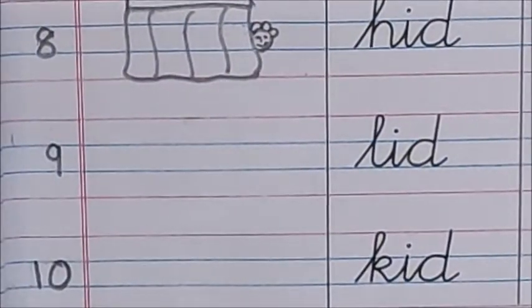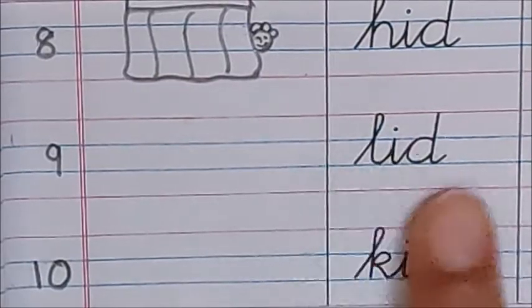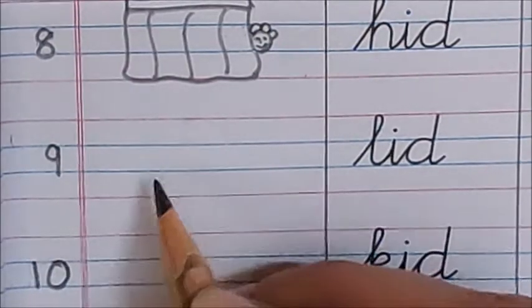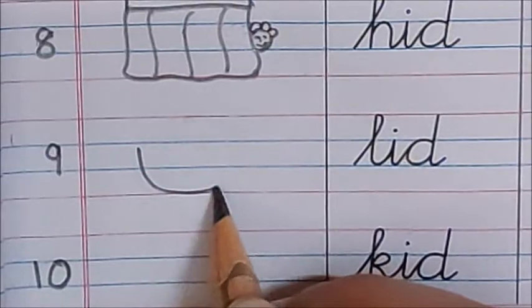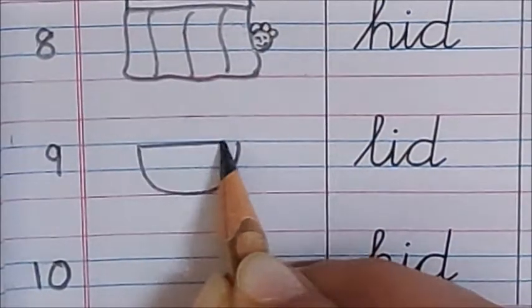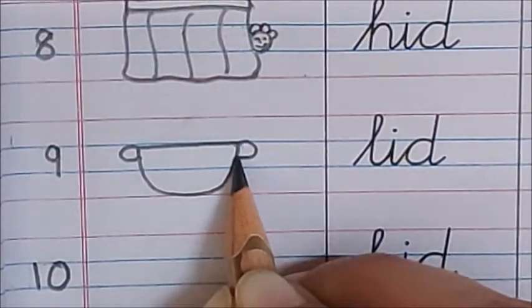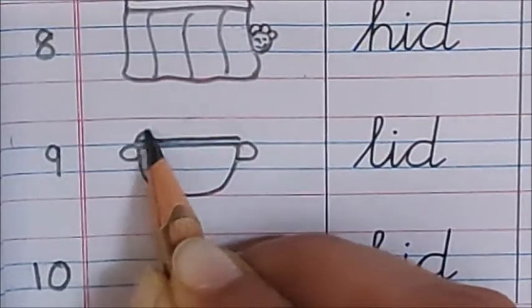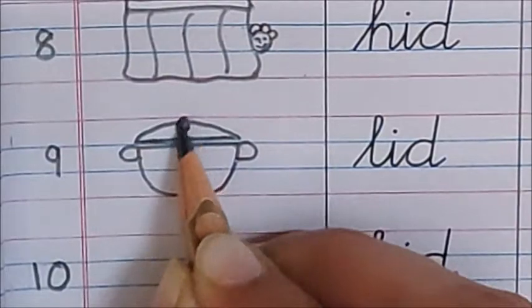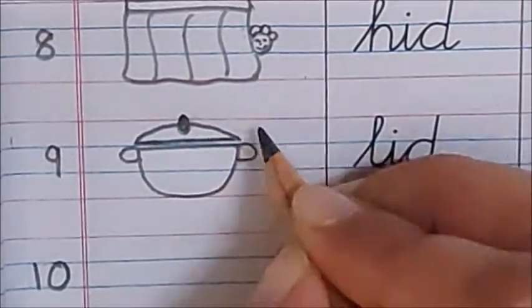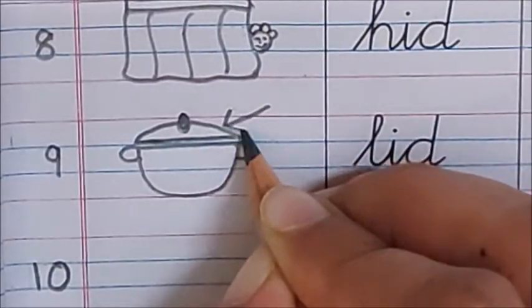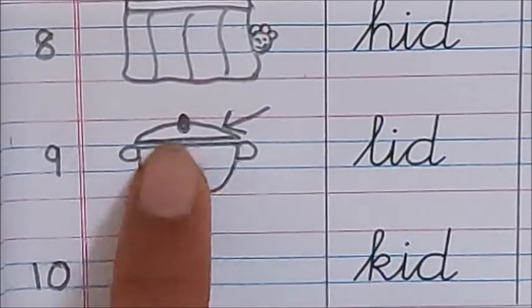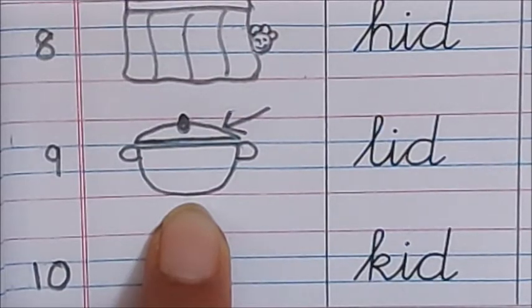Now, let us read the next word. L-i-d. Lid. L-i-d. Lid. Lid means cover. Dhakkan. This is a pan. And, this is its lid. Yeh, iska dhakkan hai. Make an arrow also pointing to the lid. This is lid. This is not the lid. This is a pan. Lid means dhakkan. Jisse haam, kisi cheez ko dhakke rakte hai.